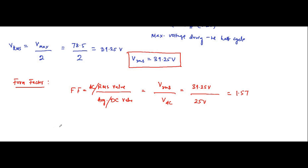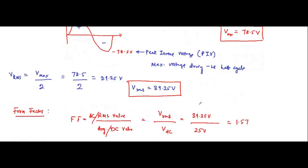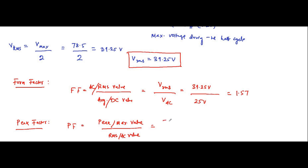Then we have the peak factor. The formula for peak factor is the peak or maximum value divided by the RMS value. Here the maximum value is 78.5 divided by the RMS value 39.25, which is equal to 2. This is the peak factor.